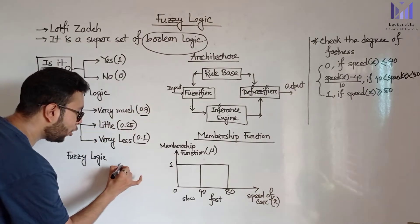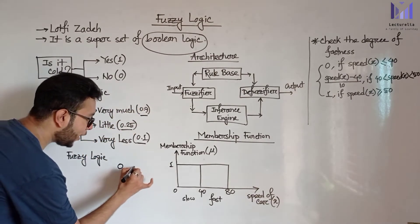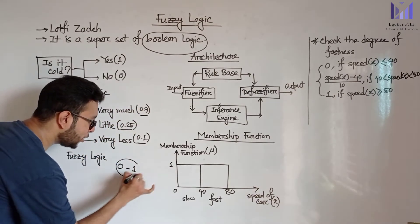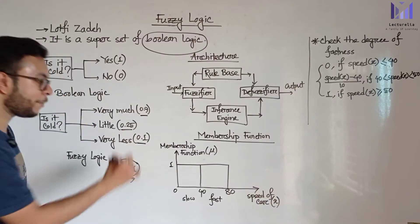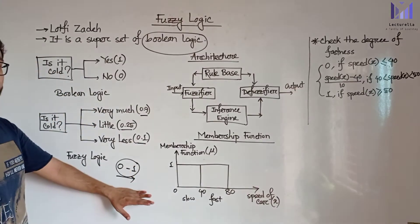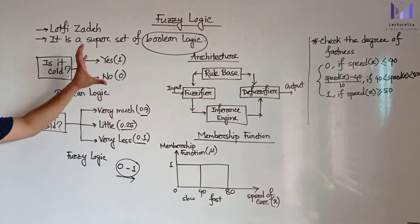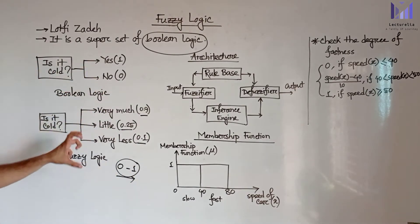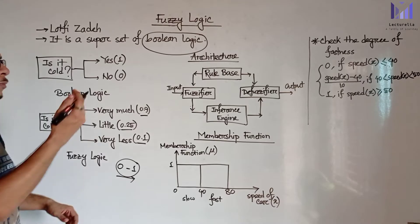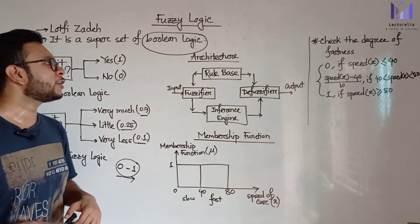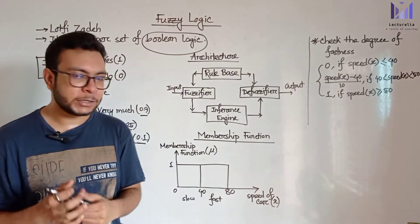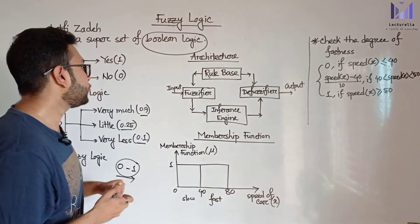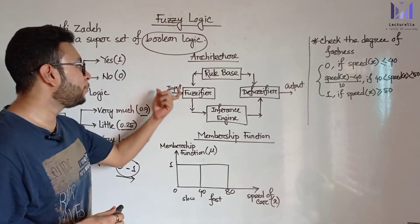These values represent the degree of coldness. So the values can be anywhere between 0 and 1 - any value in between. This is basically what fuzzy logic allows us to represent. Now let's look at the simple architecture of fuzzy logic.